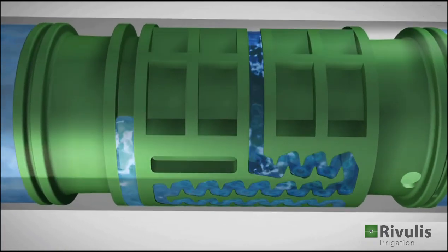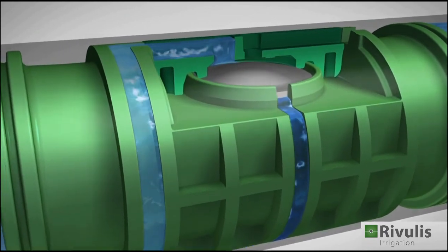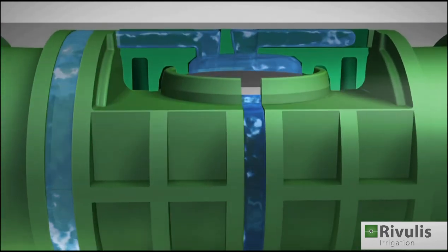The water reaching the regulating chamber exerts less pressure on the top part of the diaphragm and regulates the dripper's flow rate.